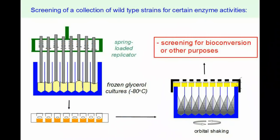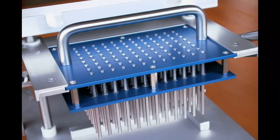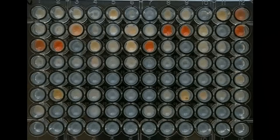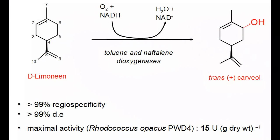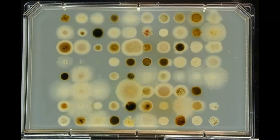The original purpose was the rapid screening of their collection of 2,000 wild-type bacterial strains for the presence of certain enzyme activities. Later, the system was also adopted for the cultivation of mutant libraries, streptomycetes and fungi, and the production of their secondary metabolites.